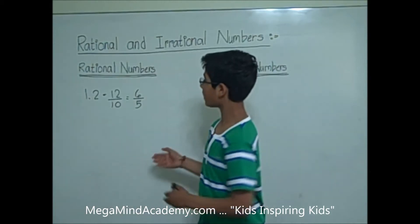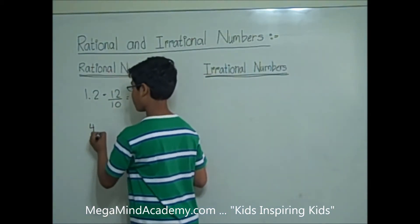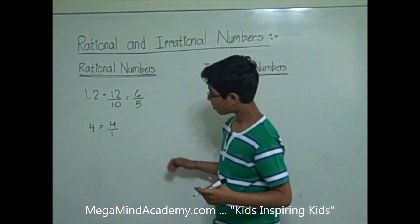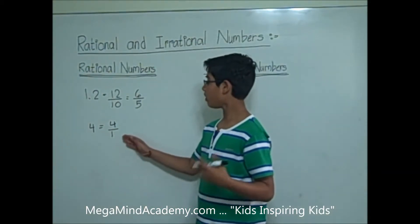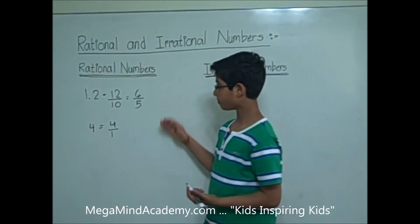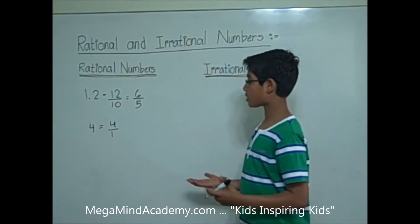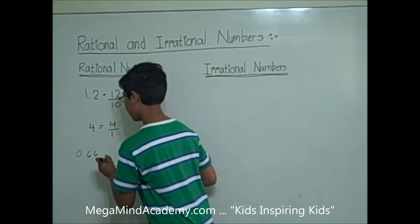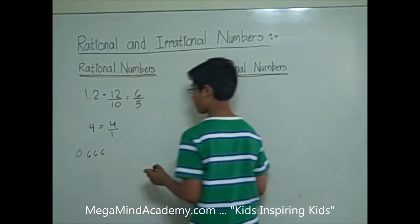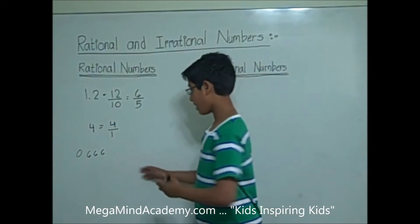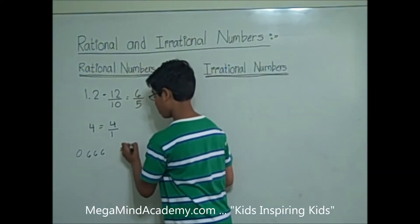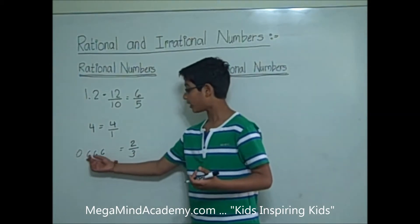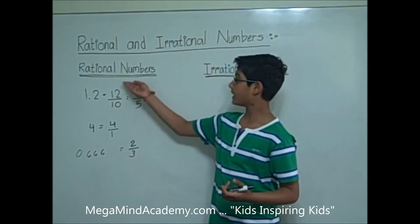Another example of a rational number is the number 4. 4 can be written as the fraction 4 over 1. 4 over 1 is a simple fraction, so 4 is a rational number. Another example is 0.666... which can be written as the fraction 2 thirds. 2 thirds is a simple fraction, so 0.666... is a rational number.